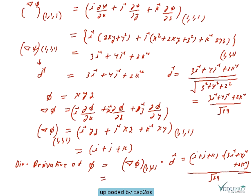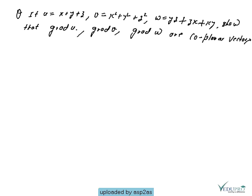That gives us 9/√29. This is the directional derivative of the scalar function phi, in the direction of the outer normal to the surface psi.